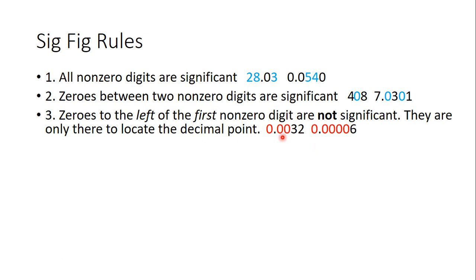Rule three: if we have zeros to the left of the first non-zero digit, they are not significant. That's why I have them in red. So these zeros are all to the left of our first non-zero digit, so they are not significant.